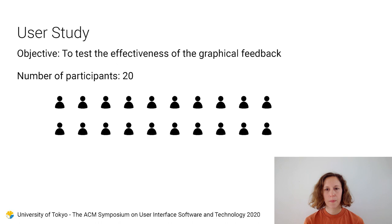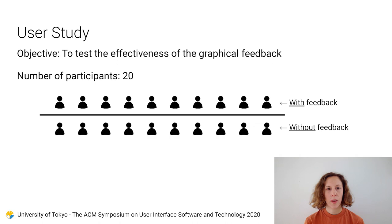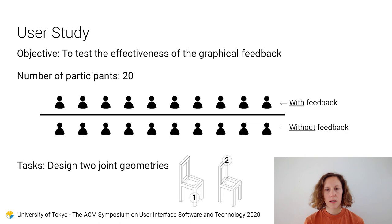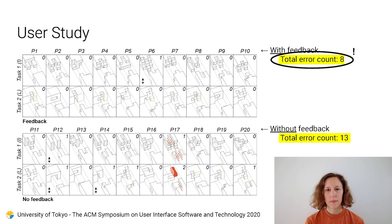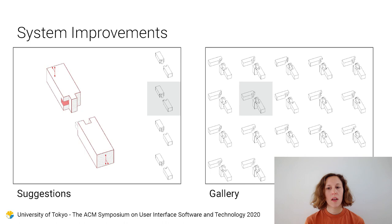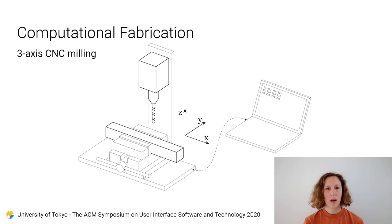To test the effectiveness of the graphical feedback, we performed a user study with 20 participants. This study was performed on an earlier version of the system and informed some system improvements. The participants were divided into two groups — one with and one without visual feedback — and given the same tasks to create two geometries. As expected, the group with feedback performed better, making eight errors compared to 13. Even so, the error count was rather high in the feedback group. We realized that while graphical feedback effectively indicates where there is a problem, it does not tell how to solve it. This motivated us to extend the interface with the suggestions and the gallery.